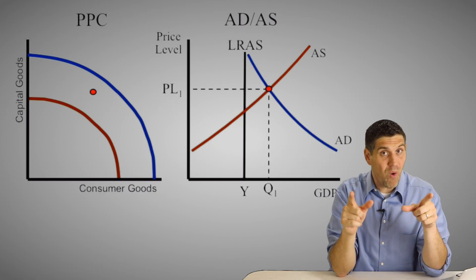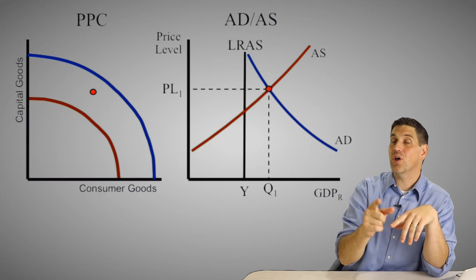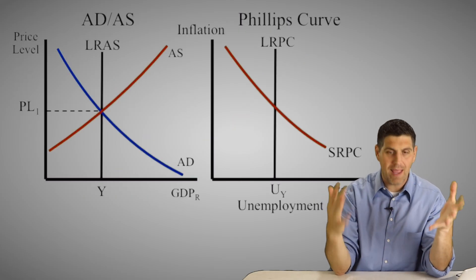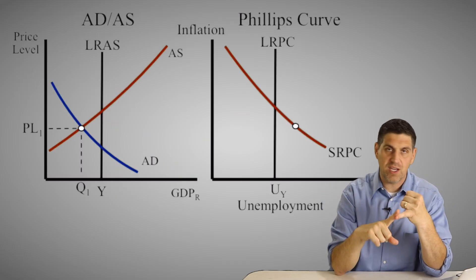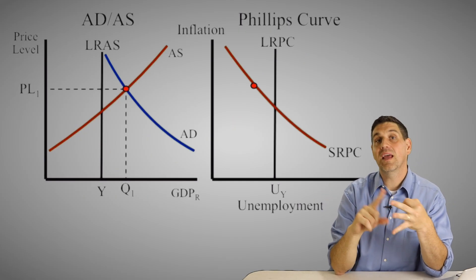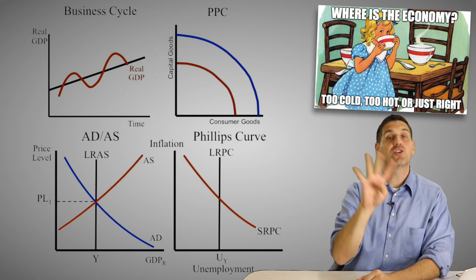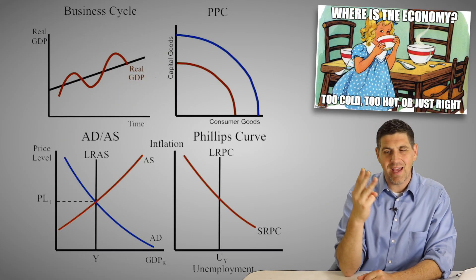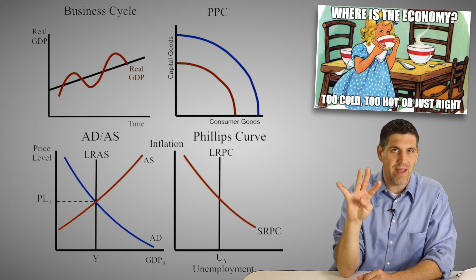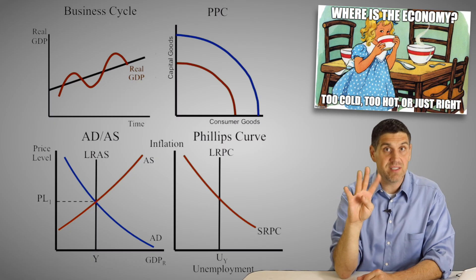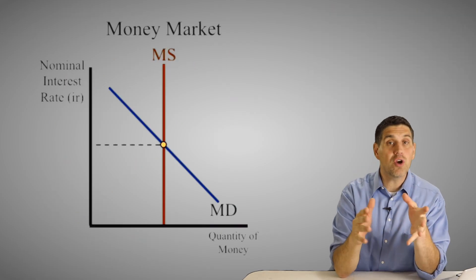There's also the Phillips curve, which shows the same concepts: recessionary gap, full employment, inflationary gap. So four graphs — three you probably need for your test; the business cycle, not so much — all show the same concept: where is the economy?